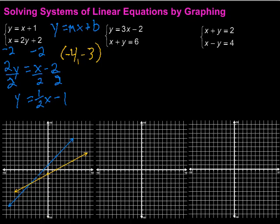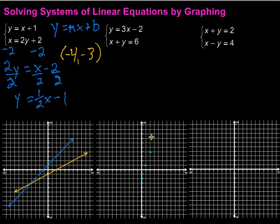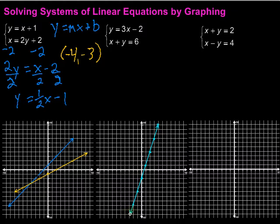Let's try the next problem. The first equation is already set and ready to graph — no changes needed. The y-intercept is negative 2, so we start there. The slope is 3, meaning up 3 over 1 for each step. We plot points going up 3 over 1 repeatedly, and also down 3 to the left 1, since a negative over a negative is positive. Then we draw the line.